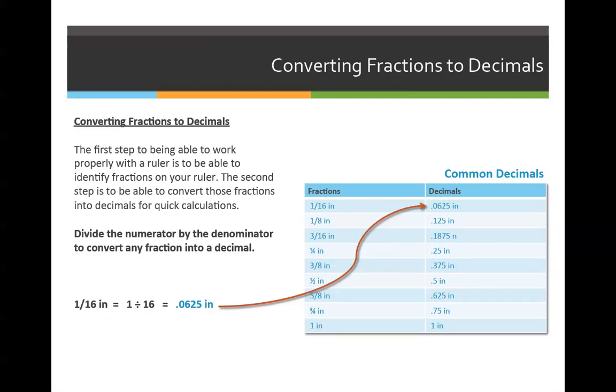I would like you now to practice converting fractions to decimals, and it is as simple as dividing the numerator by the denominator. So when I converted 1-16th to 0.0625 inches with my calculator, I did 1 divided by 16 equals 0.0625. I would like you to go through this chart and confirm that all of the answers are correct on the right-hand side. If they're not correct, you're going to have to fix them in your notes.